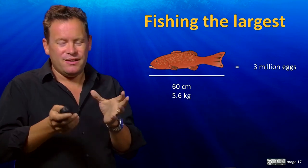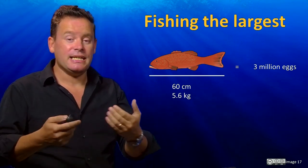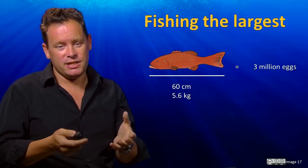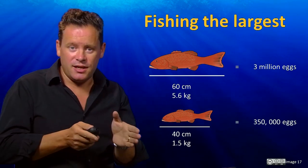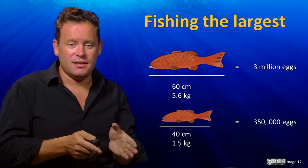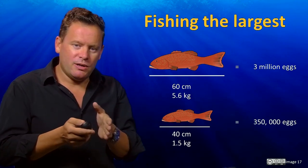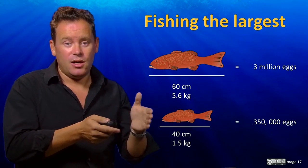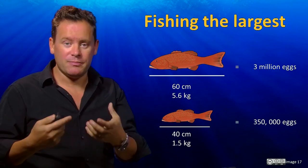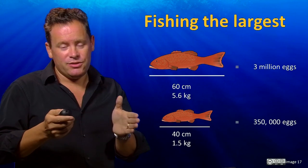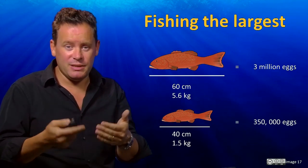One of the problems caused by removing big fish is that they play a disproportionately large role in sustaining the next generation. A 60-centimetre coral trout generates 3 million eggs, while a 40-centimetre coral trout — two-thirds of the size — generates only one-tenth as many eggs. This means that when managing fisheries, we need to avoid catching the smallest individuals not yet old enough to reproduce, but also protect the largest individuals because of their disproportionate reproductive impact. Typically, many fisheries now fish a 'slot' or intermediate range of size classes to minimise the impact on sustainability.